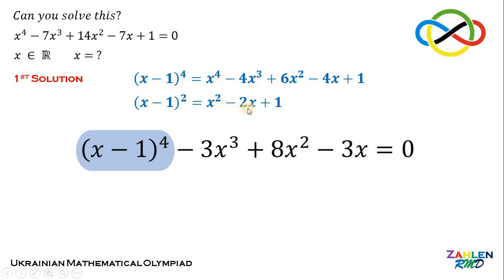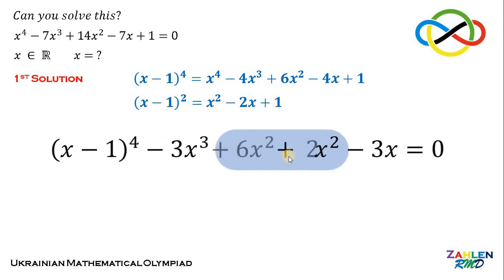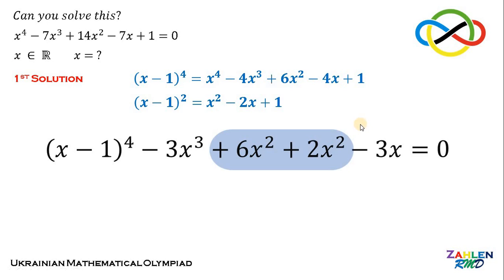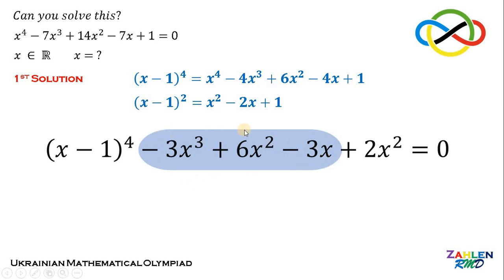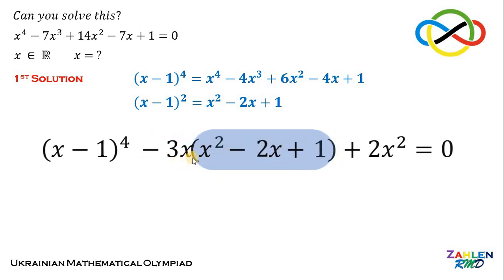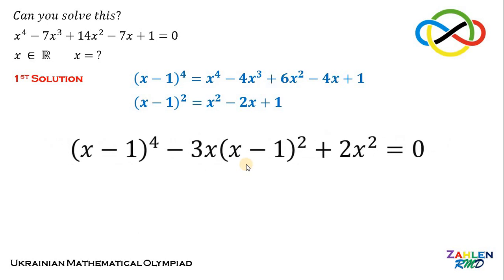To introduce (x minus 1)^2, notice that 8x squared can be separated as 6x squared and 2x squared. Rearranging, we get negative 3x cubed plus 6x squared minus 3x, and factoring out negative 3x gives negative 3x times (x squared minus 2x plus 1), which is exactly (x minus 1)^2. So we now have (x minus 1)^4 minus 3x times (x minus 1)^2 plus 2x squared.